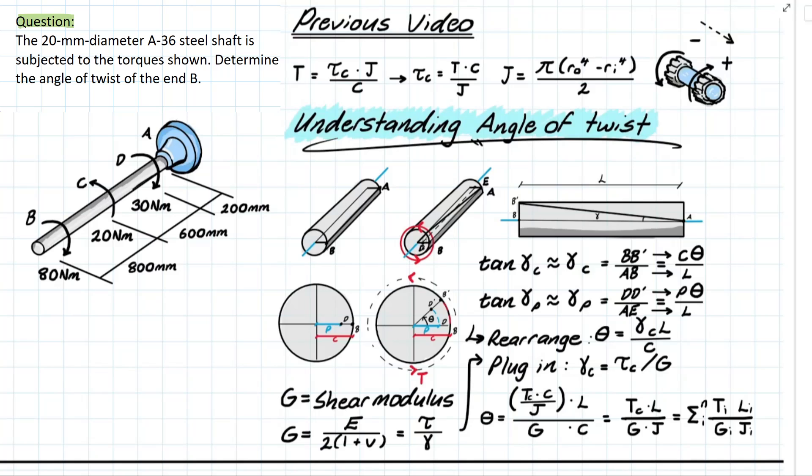Now what is this doing? This is going to create an angle actually at the face of the member which is known as the angle of twist.